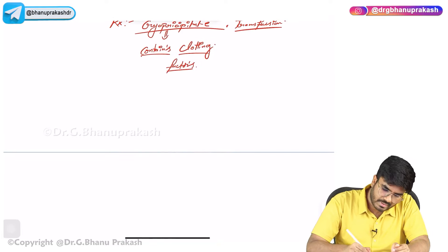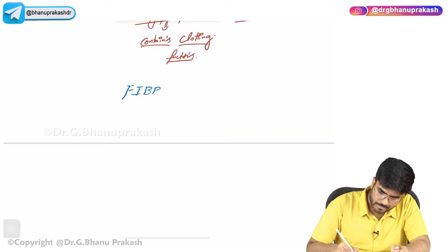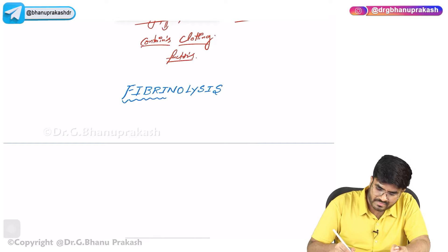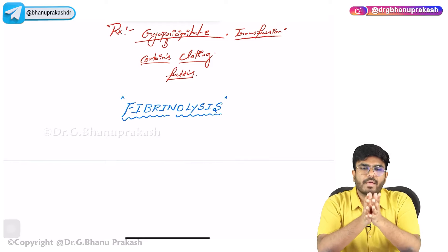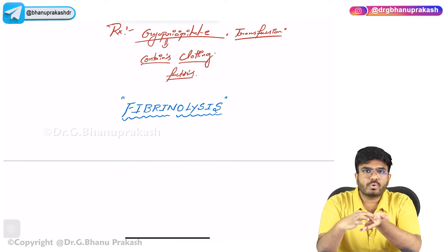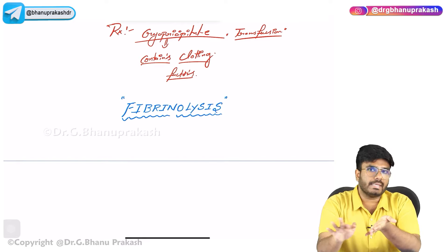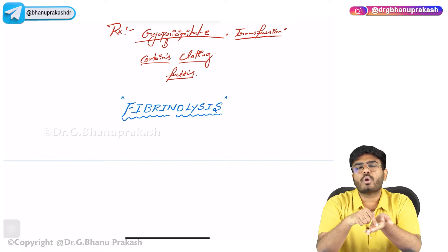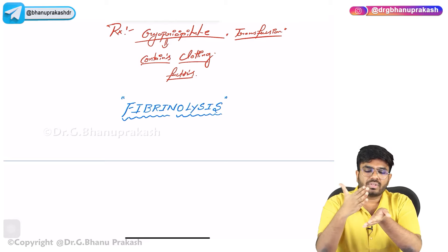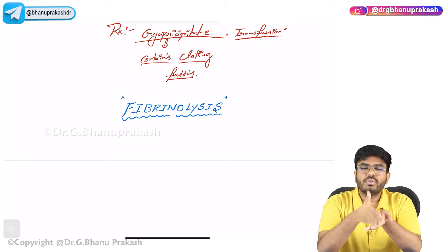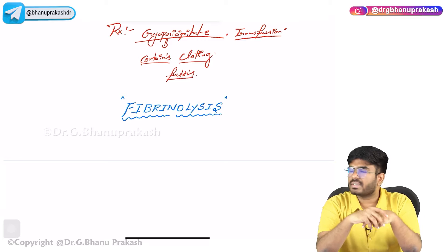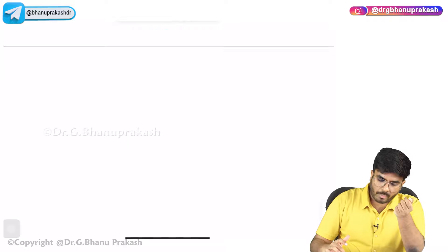Now let's discuss normal fibrinolysis. Why fibrinolysis? Say there is damage to a blood vessel — a clot forms in that area to seal it. Once the blood vessel is completely healed, do you still require the platelet microthrombi? No — you need to break down that clot. This is called fibrinolysis, and it is absolutely physiological. So how does normal fibrinolysis happen?